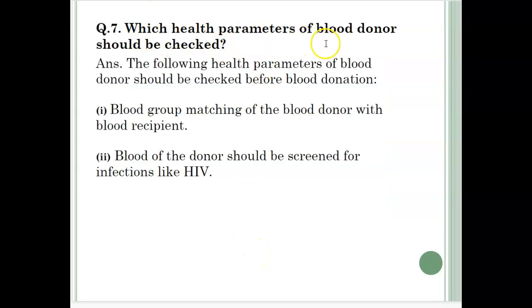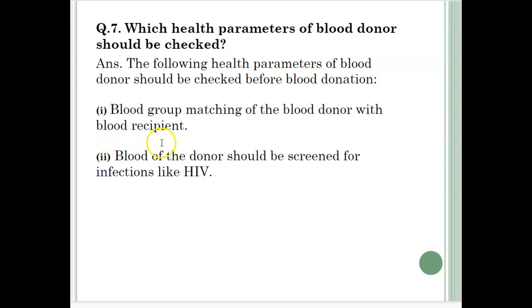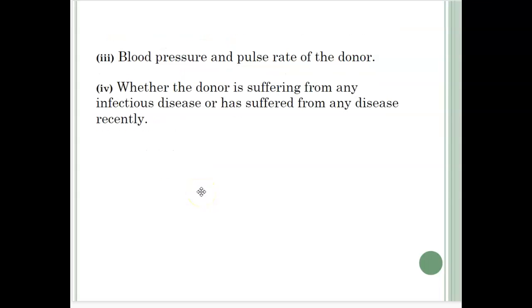Which health parameters of blood donor should be checked? The following health parameters should be checked before blood donation: first, blood group matching of the donor with the recipient; second, blood of the donor should be screened for infections like HIV; third, blood pressure and pulse rate of the donor; fourth, whether the donor is suffering from any infectious disease or has suffered from any disease recently.